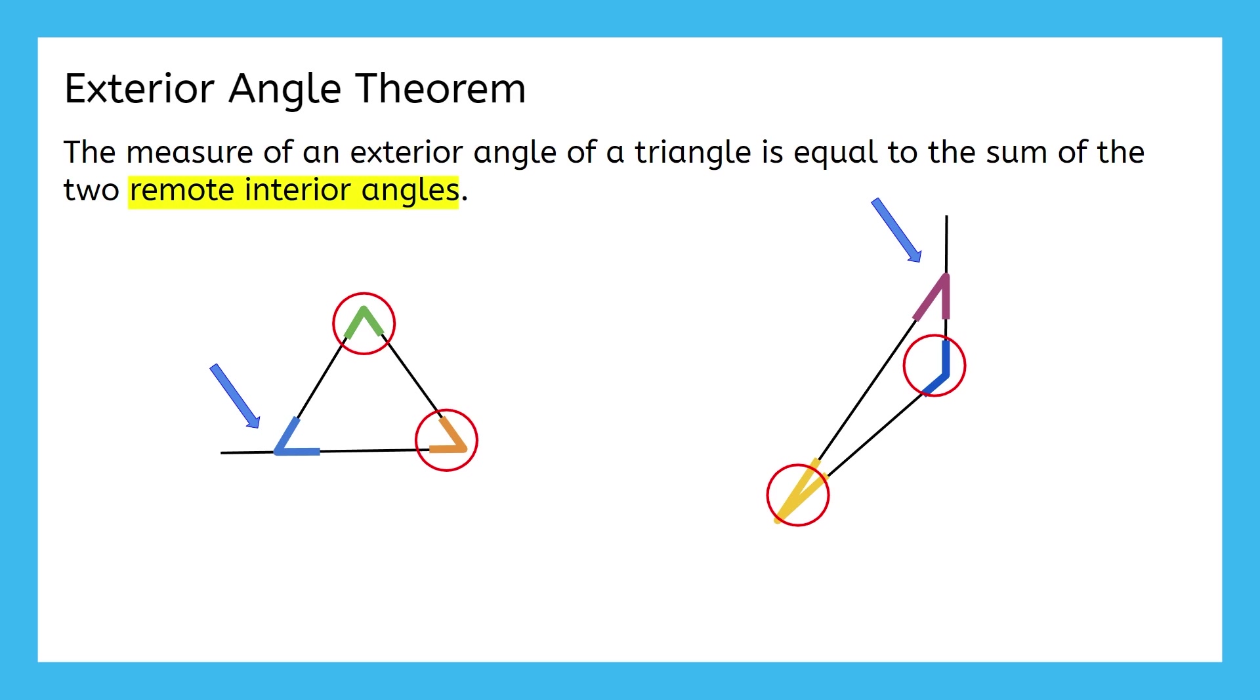Now, let's finish piecing this theorem together. The Exterior Angle equals the sum of the Remote Interior Angles. That's basically just saying that this angle measure equals these added together.